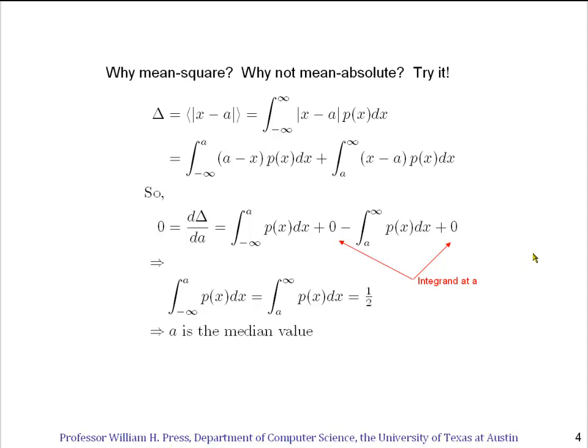Why do we use the mean square? That might have seemed somewhat arbitrary to you. Why didn't we use, for example, mean absolute? So let's try that. Let's define a new Δ, which is the expectation of the absolute value of |x - a| for some unknown value a that we're going to solve for. Now, how do you take an expectation of an absolute value? Expectation is always the same. It's just the integral weighted by p(x)dx of what the anything is, the x minus a. Now, to do this integral, we have to be a little tricky because this is non-analytic at x equals a, so we break it up into two pieces. When x is less than a, then the absolute value is a minus x, and we do that integral just from minus infinity, x goes from minus infinity to a, and then when x is greater than a, so we do the integral from a to infinity, the integrand becomes x minus a.